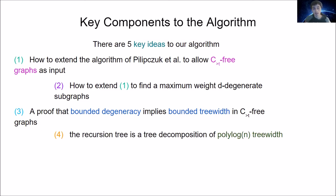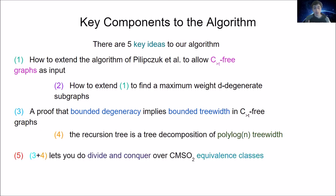The fourth key idea is that in some sense we can interpret the recursion tree from our algorithms as a tree decomposition of poly-logarithmic treewidth of our intended solution. The fifth key idea is that combining points three and four allows us to divide and conquer over CMSO₂ equivalence classes.